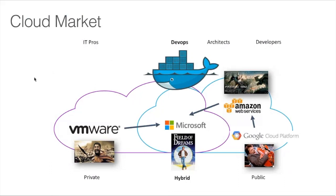Why has Docker been so successful? In the past five years, we've been in a big war between three public cloud providers — Microsoft, Google, and Amazon — with Amazon at the top, Microsoft chasing close behind, and Google quite far behind. Then you have VMware, who owns inside-the-firewall infrastructure with virtualization. VMware mostly talks to IT pros, while Amazon, Google, and Microsoft got their adoption in public cloud through developers. Two trends explain Docker's success when it appeared three years ago.